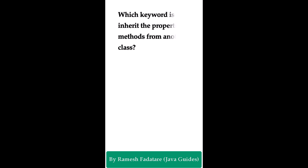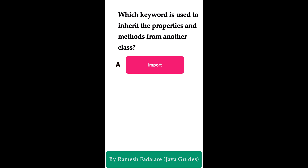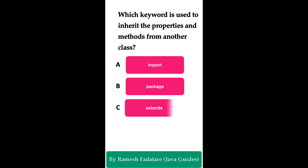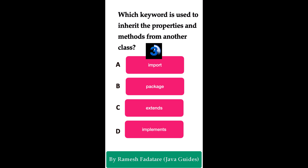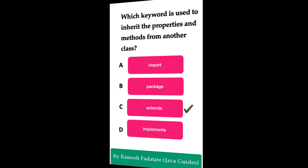Which keyword is used to inherit properties and methods from another class? Option A: import. Option B: package. Option C: extends. Option D: implements. The correct answer is the extends keyword. For example, if class A has properties and methods, and class B wants to inherit them, class B can use the extends keyword. This is the inheritance concept — in Java we use the extends keyword to extend a class from another class and inherit its properties and methods.